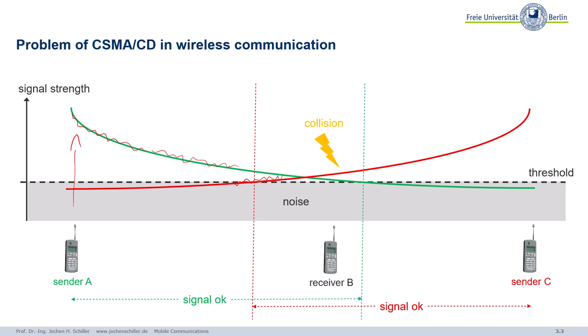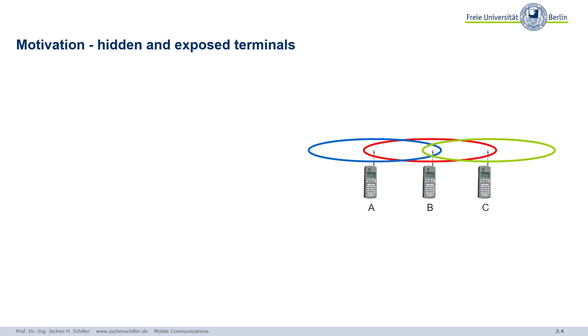Additionally, as you learned in the previous chapters, these transmission ranges vary over time — maybe there's more water in the air, or some reflection, or you're moving. So it's very difficult to precisely define a transmission range around a sender. The effect of this problem is what we call hidden or exposed terminals.